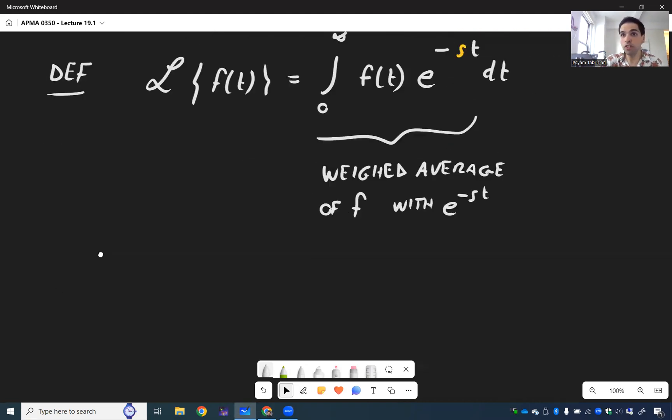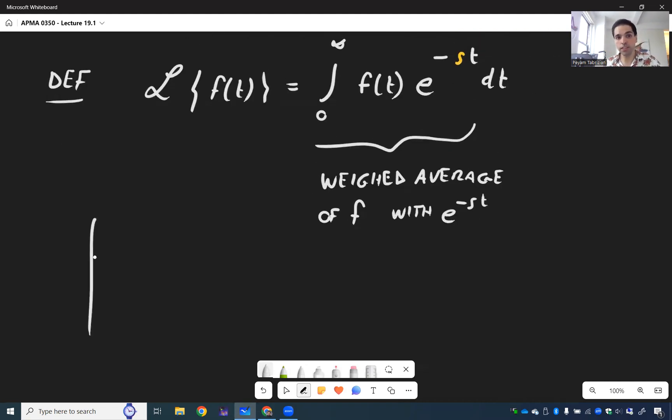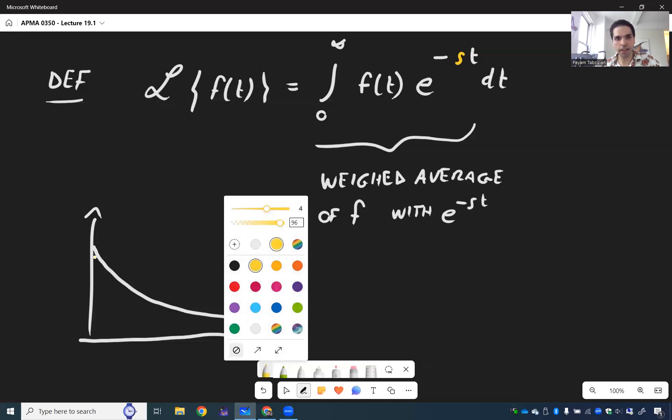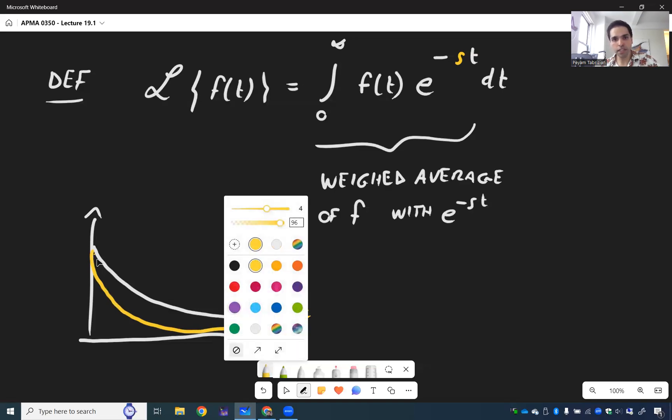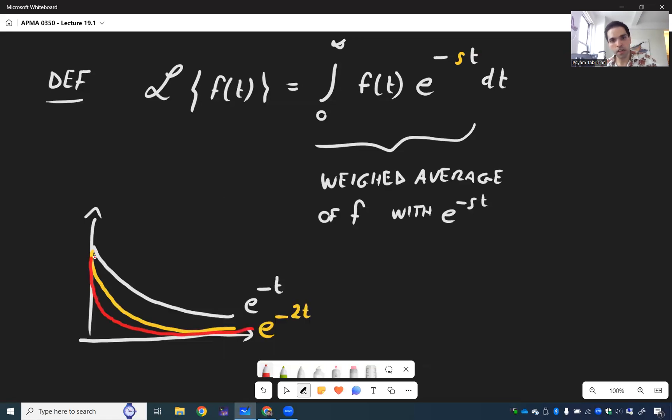And what those functions look like, they just look like smaller and smaller exponential functions. So, for instance, with s equals 1, it becomes e to the minus t. With s equals 2, it becomes e to the minus 2t. With s equals 3, it becomes e to the minus 3t, et cetera. So smaller and smaller.